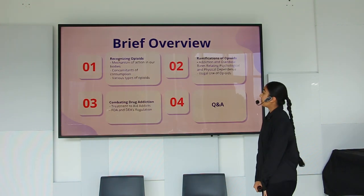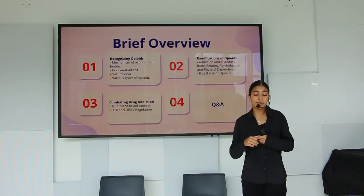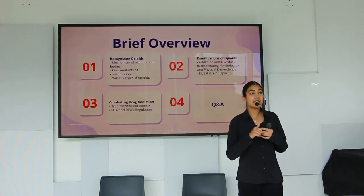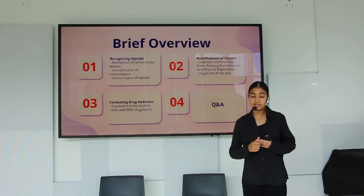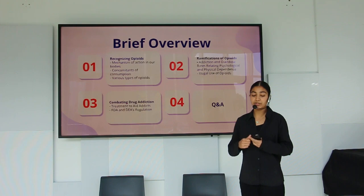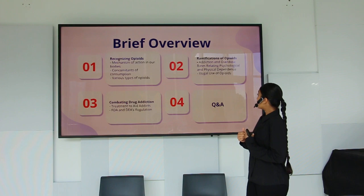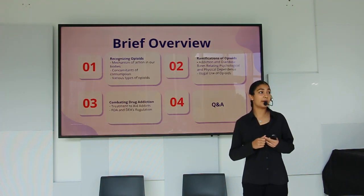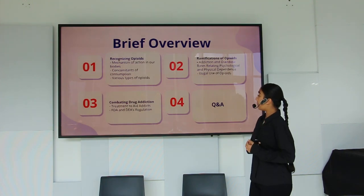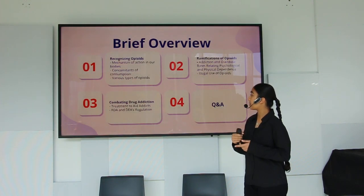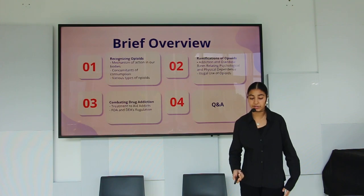Here's a little overview: first, I'll talk about recognizing opioids — the mechanism of action in our bodies, the concomitants of consumption, and the various types of opioids. Then we'll move on to the ramifications of opioids, including addiction and overdose rates, psychological and physical dependence, and the illegal use of opioids. Lastly, I'll talk about how we can combat drug addiction: treatment options, FDA and DEA regulation, and then Q&A.